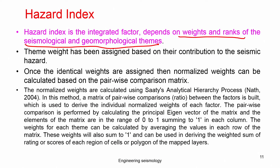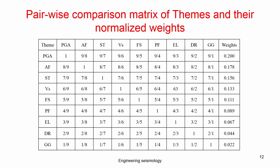Theme weights are assigned based on each parameter's contribution to seismic hazard in a particular region. From past earthquake isoseismal and intensity maps, you can identify which parameters contributed more to the hazard, and assign more or less weight accordingly. Once weights are assigned and normalized using the pairwise comparison matrix, you then assign ranks to each parameter's subdivision and calculate normalized ranks. Multiplying all of these systematically gives you the hazard index value.